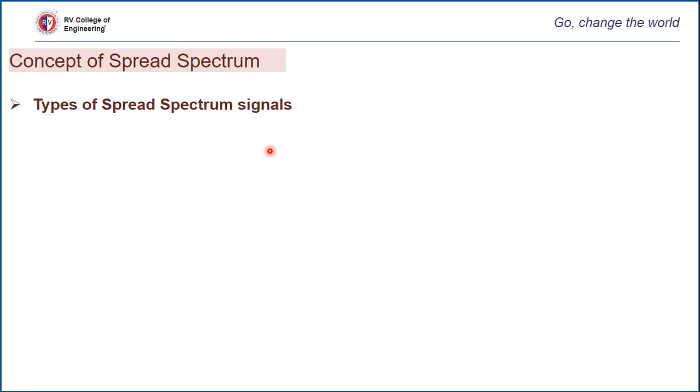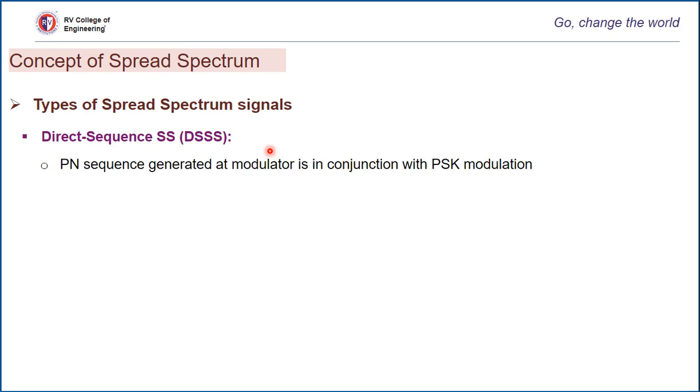The PN sequence generated at the modulator is used in conjunction with PSK modulation to shift the phase of the PSK signal pseudorandomly.